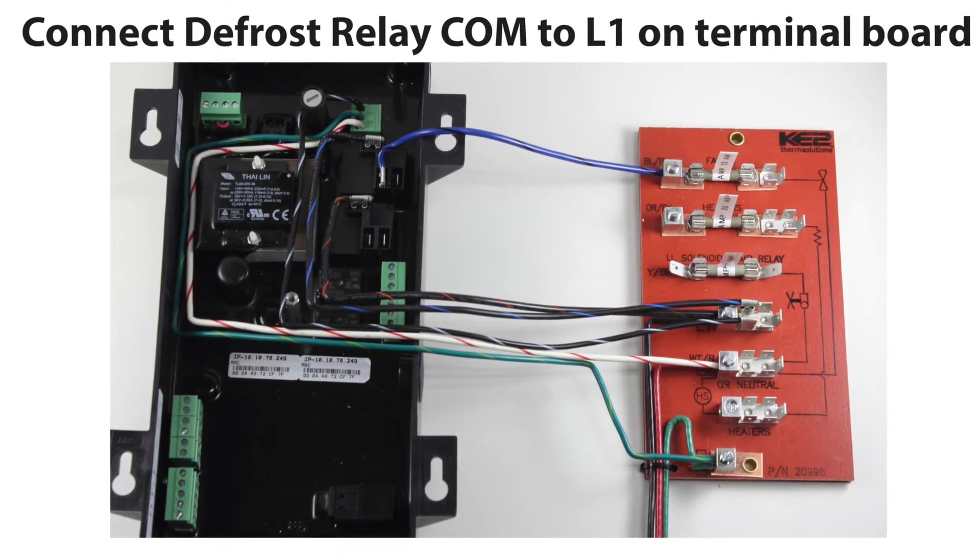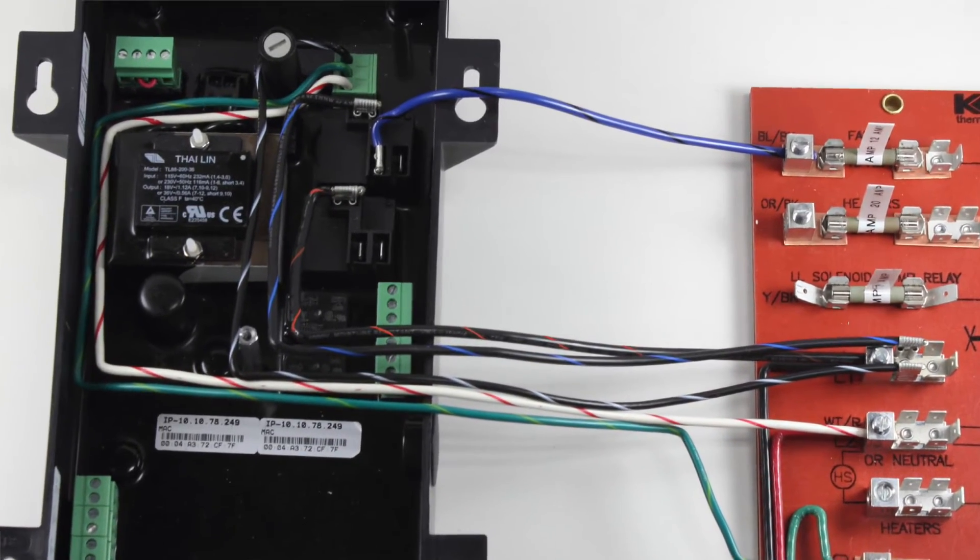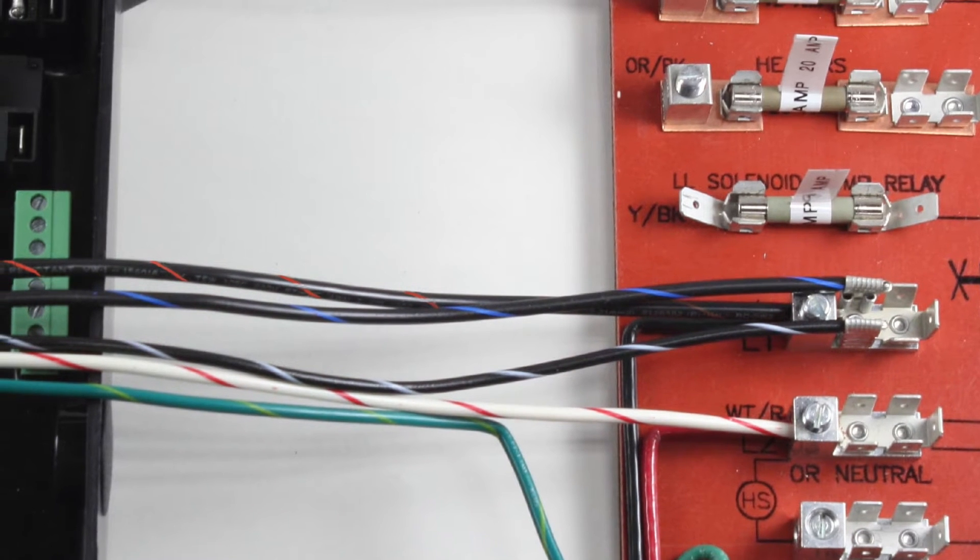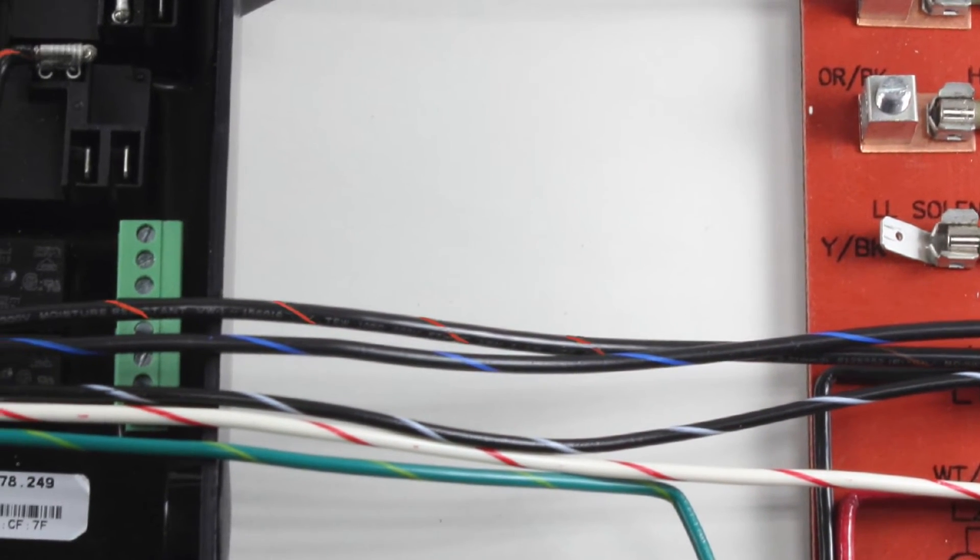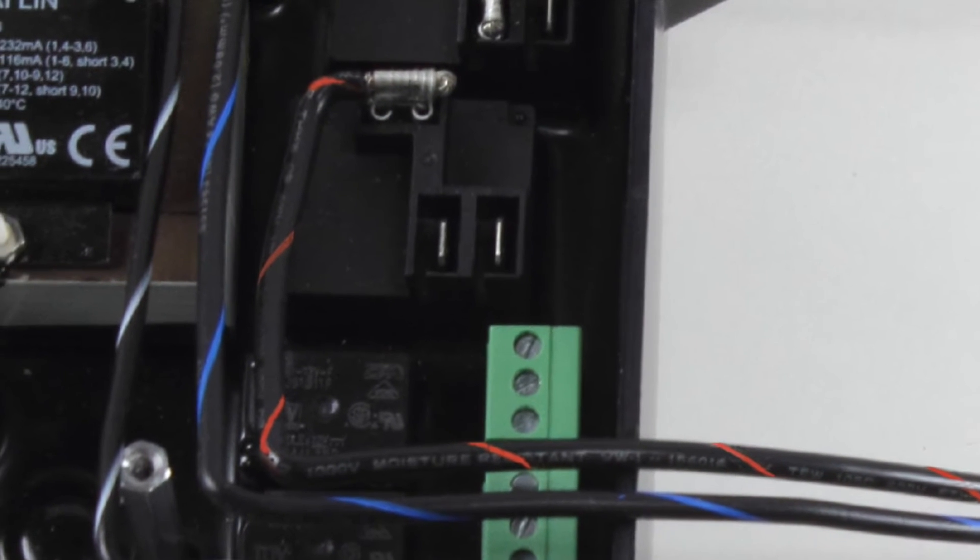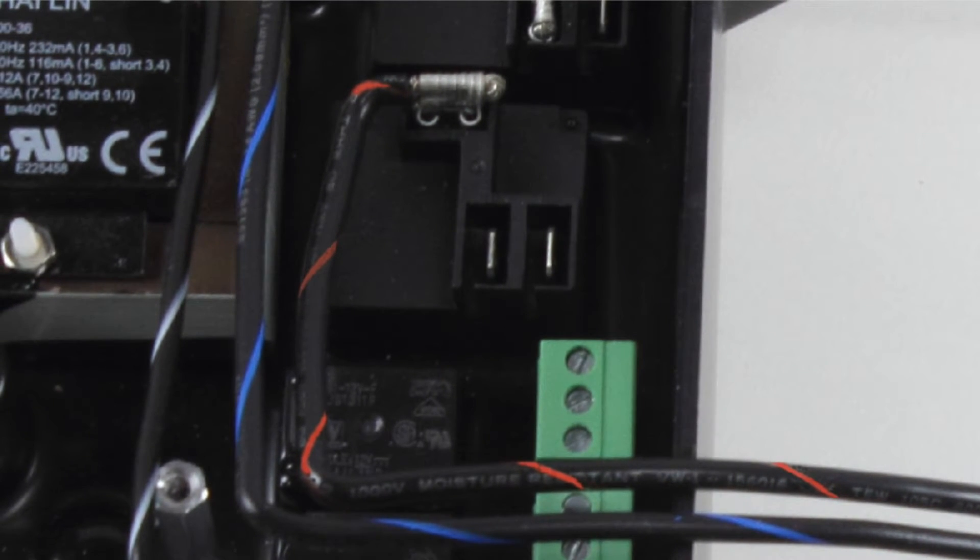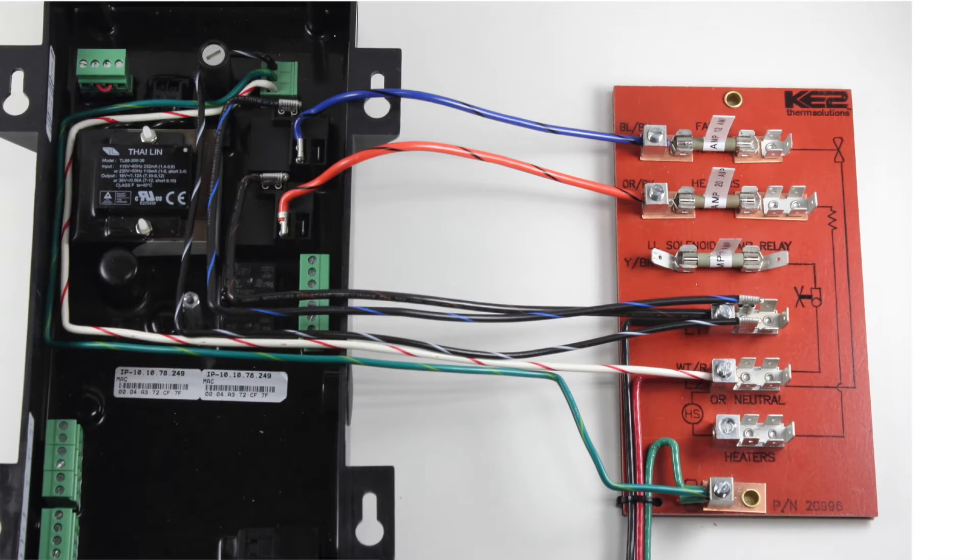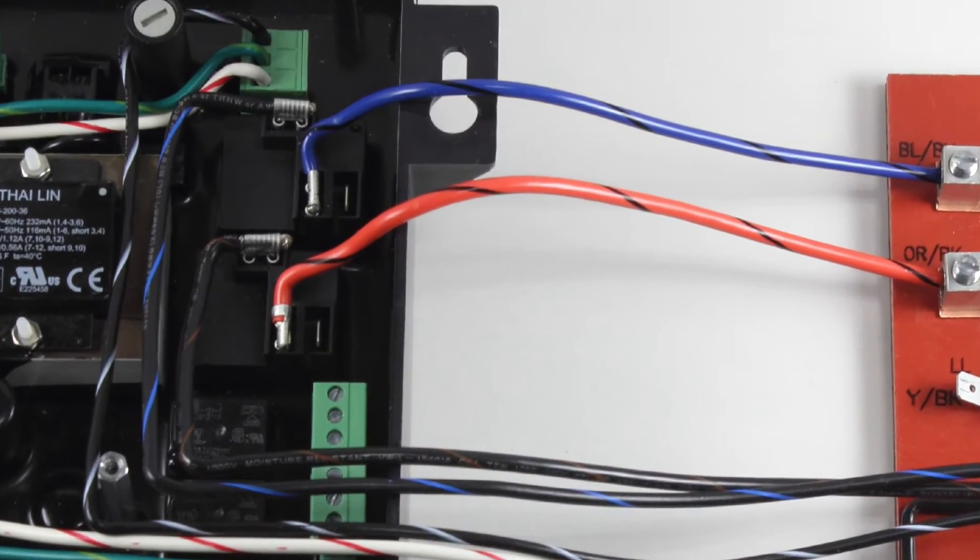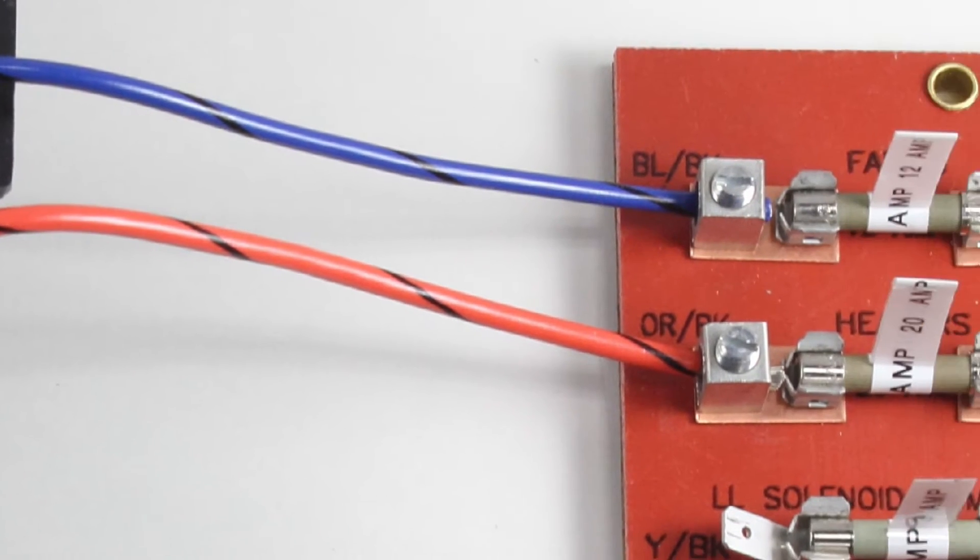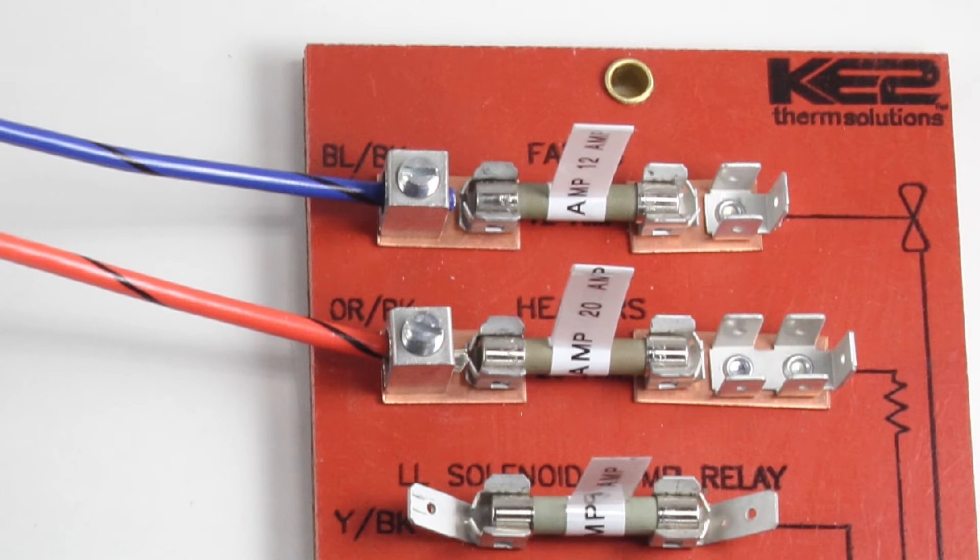Next, the defrost relay dry contact needs power provided to the common terminal. Connect line 1 on the terminal board using the black with orange stripe. Wire to the common on the defrost relay as shown. Connect from the defrost relay normally open set of contacts using the orange with black stripe wire to the orange to the black location as shown on the terminal board.